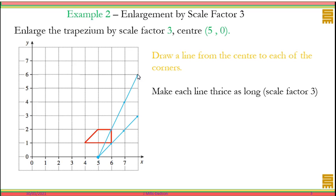One, two. One, two. One, two. One diagonal, so it's one, two, three. Join the ends of those lines and you've got your image, or the enlarged shape done.